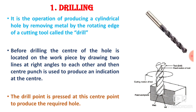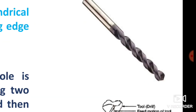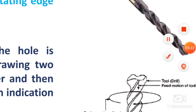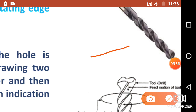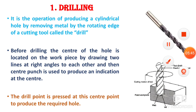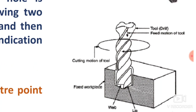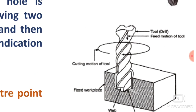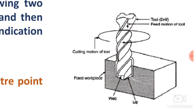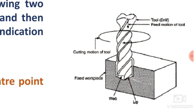The drill bit has two cutting edges, and at the intersection of those cutting edges we get a cutting point. The drill point is pressed at the center point to produce the required hole. This is the drilling process — the drill bit is a rotary member, the workpiece is fixed on the table, and the drill bit has a web and lips. The lips are the two cutting edges of the drill bit.